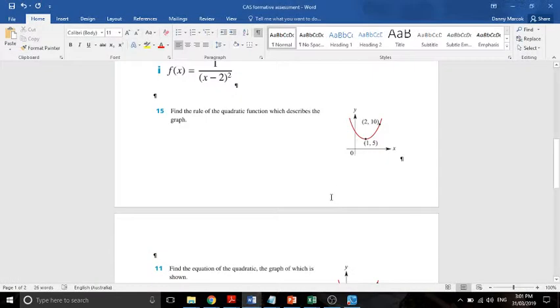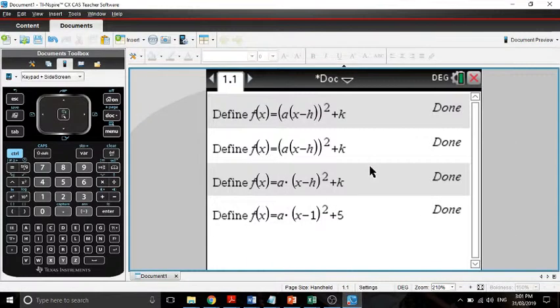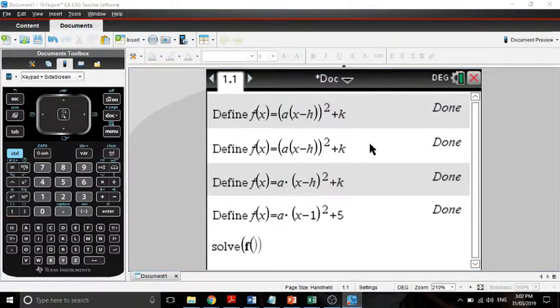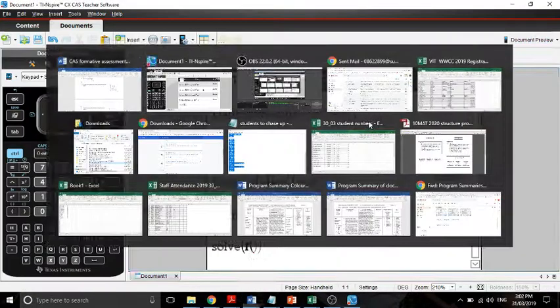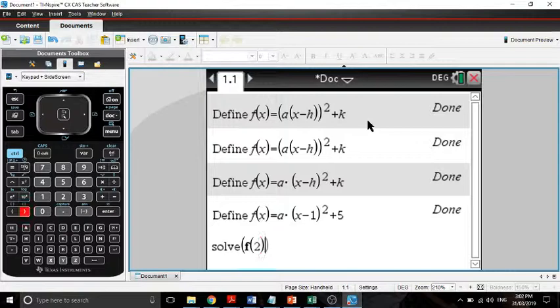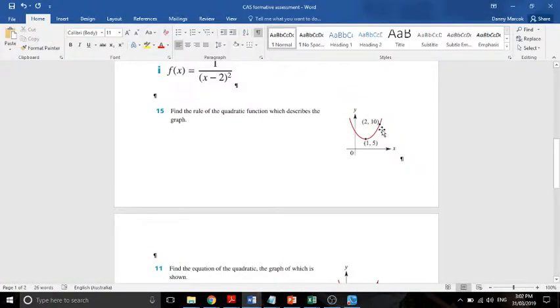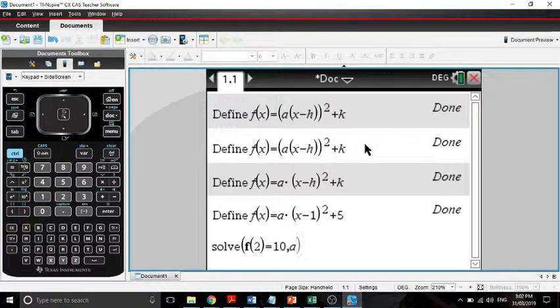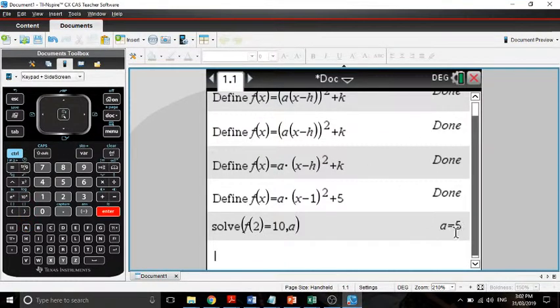That's defining that. And then what we do is we substitute this value, x for 2 and y for 10 and we solve for a. So we're going to write solve f of 2, close the brackets, equals, it equals 10 for a. Now we press enter and it tells us that a is 5.